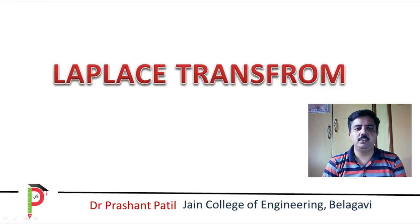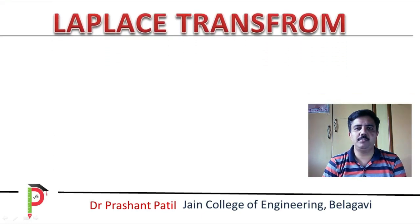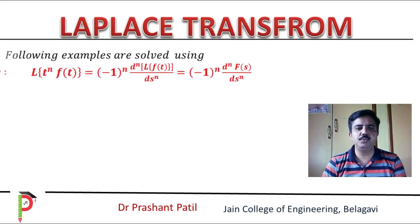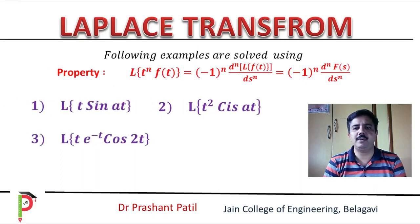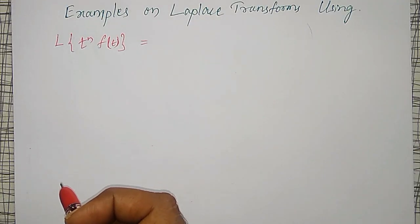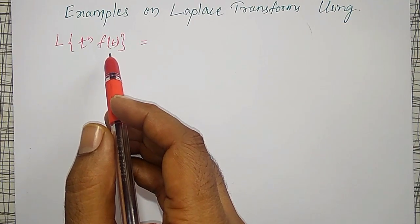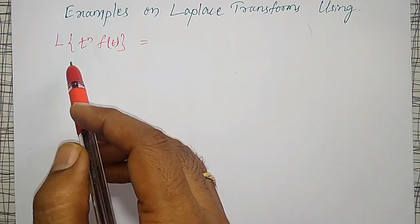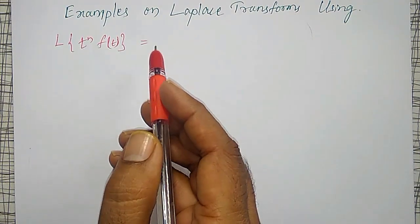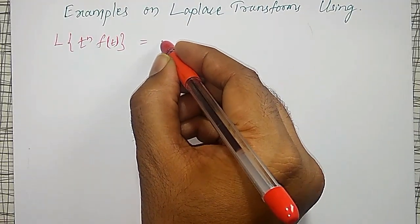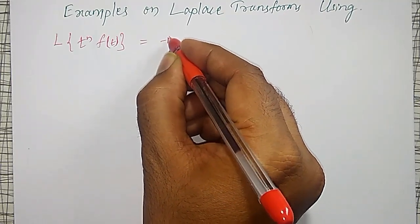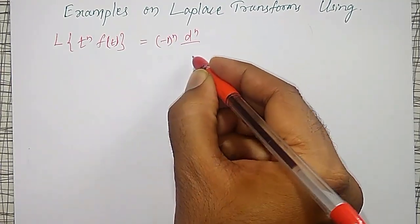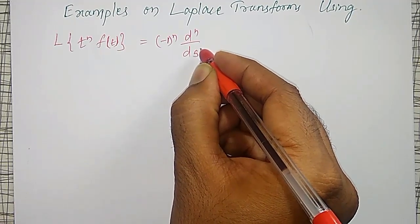In this video, I am going to solve examples on Laplace transforms using the property: t to the power n into f of t will transform as the nth derivative. That is, minus 1 to the power n into nth derivative with respect to s of the Laplace transform of f of t.